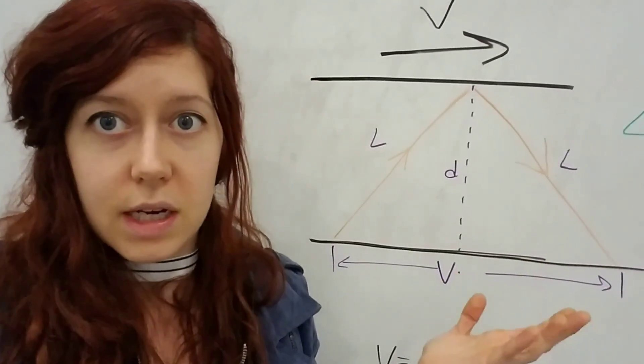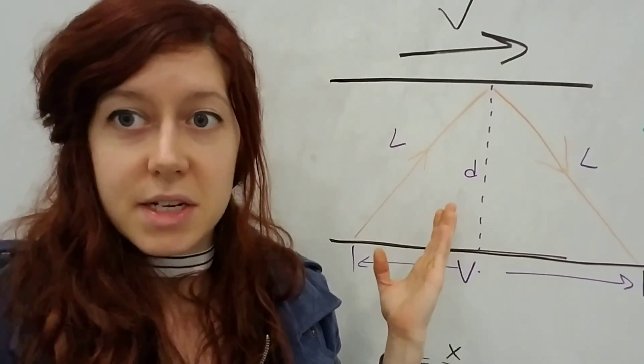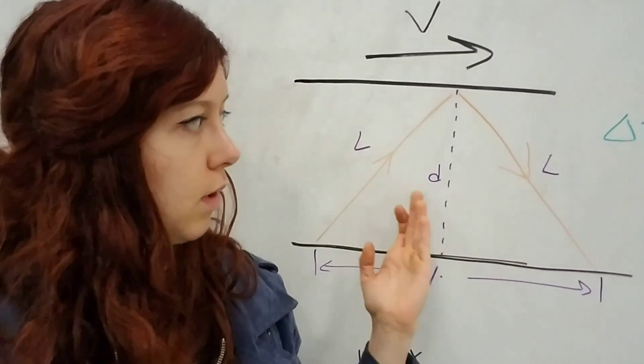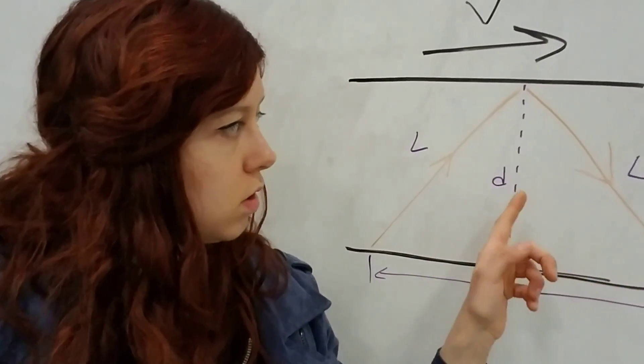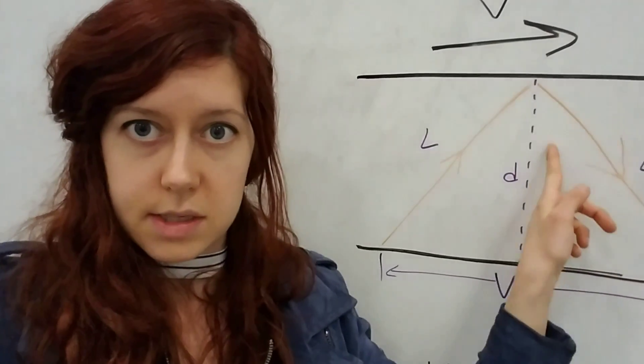when you're traveling along at a speed v, it takes longer for the light to reach an observer's eye, because the hypotenuse of the triangle is longer than this side d.